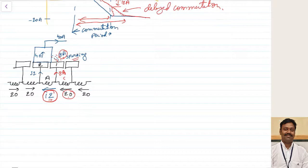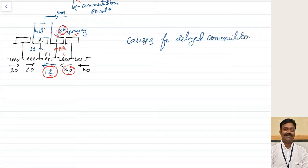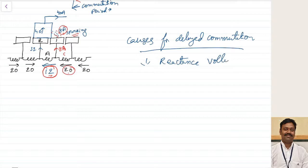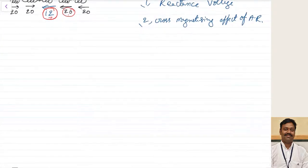Let us now see what are the causes for the delayed commutation and how to overcome this. The causes for delayed commutation are: first, reactance voltage; and second, the cross-magnetizing effect of armature reaction.